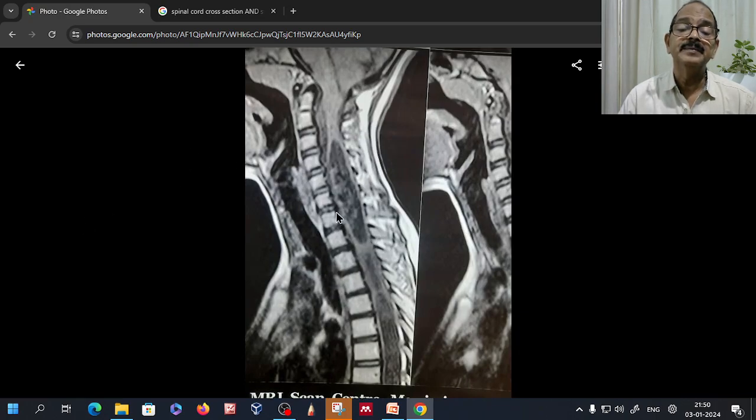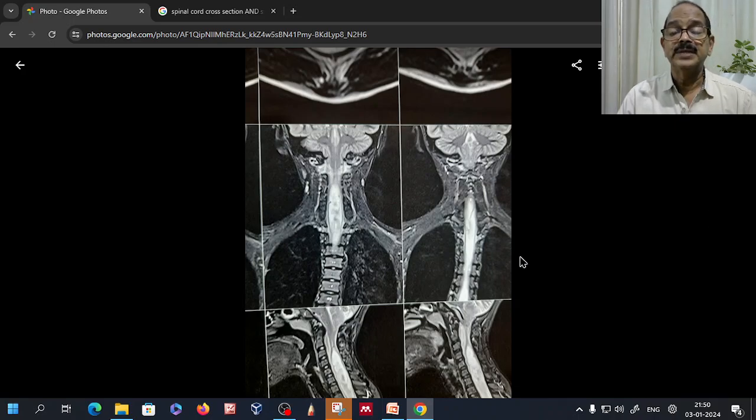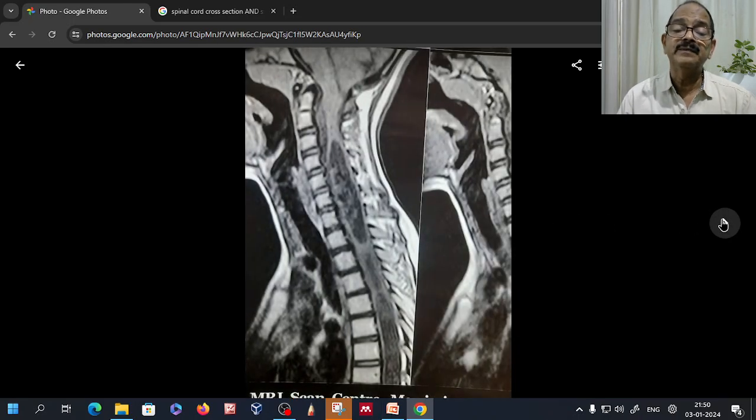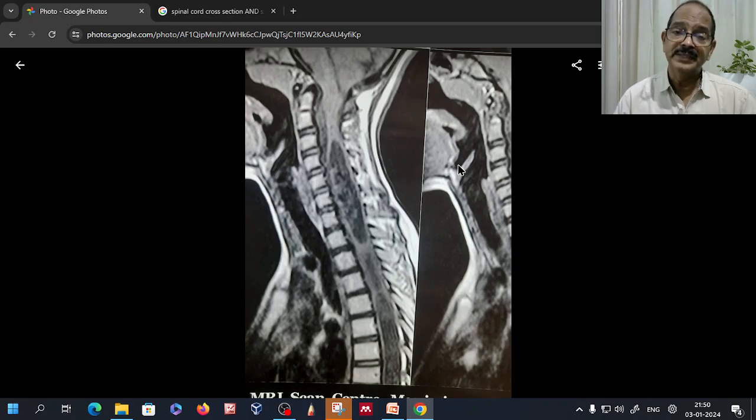This is another image. This is the coronal section showing this thing. So that's how you evaluate. In this case, it was basically involvement due to syringomyelia. The Arnold-Chiari malformation was not that significant. It was, radiologists also may not be agreeing to that significant thing. There was not much of involvement in the long tracts. The pyramidal signs were not there. Thank you.